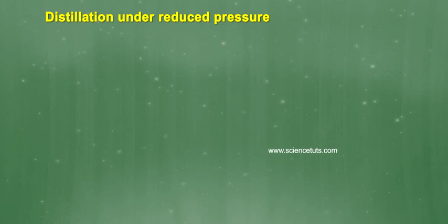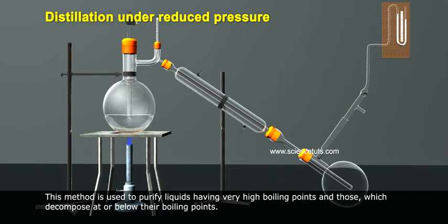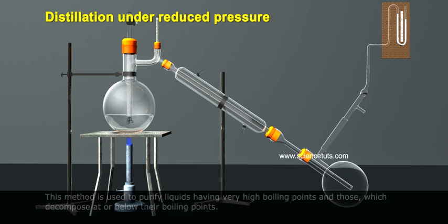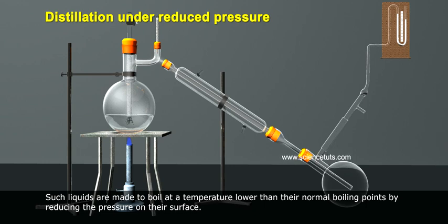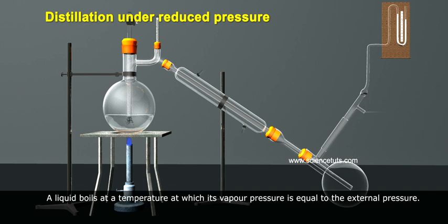Distillation under reduced pressure. This method is used to purify liquids having very high boiling points and those which decompose at or below their boiling points. Such liquids are made to boil at a temperature lower than their normal boiling points by reducing the pressure on the surface. A liquid boils at a temperature at which its vapor pressure is equal to the external pressure.